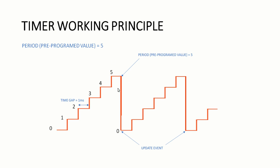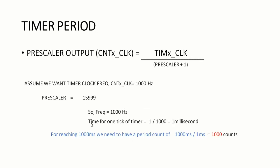Using the diagram explained in the previous lecture and the prescaler formula, you can calculate the time gap and scale down the timer frequency with the appropriate prescaler value. Now the timer is configured to run at 1 millisecond per step. To overflow the timer at exactly 1 second, since one tick is 1 millisecond, 1 second equals 1000 milliseconds — so 1000 ms divided by 1 ms gives 1000 counts. If the auto-reload value is loaded with 1000, the timer will run for exactly 1 second and produce an interrupt every 1 second. So the period value is 1000.